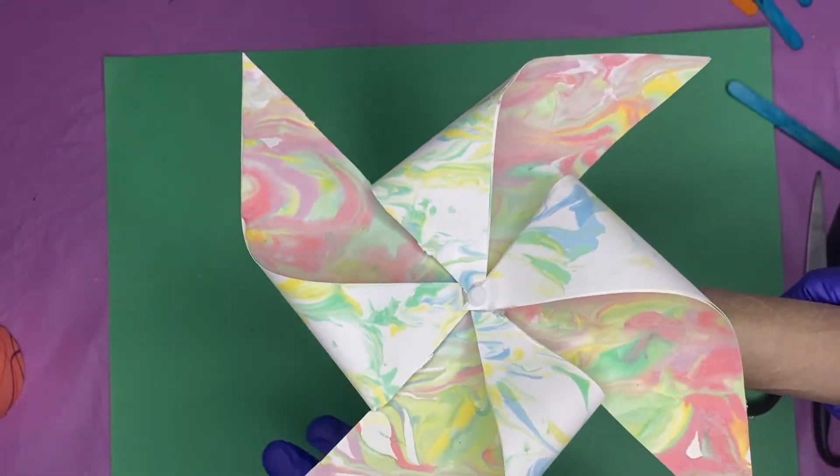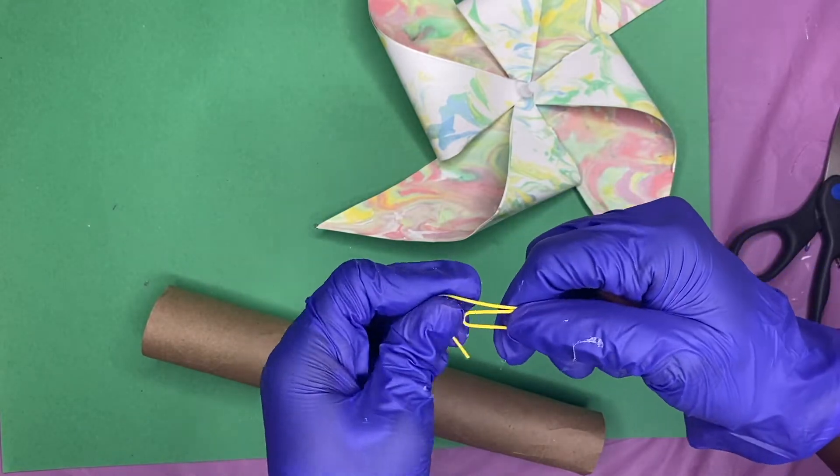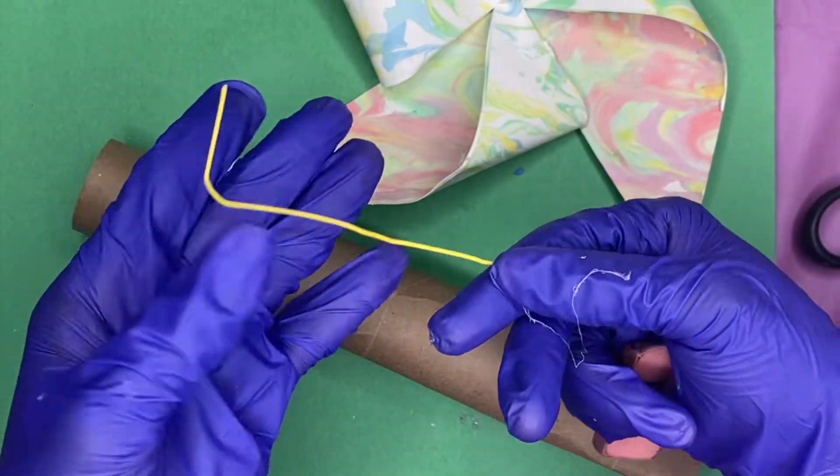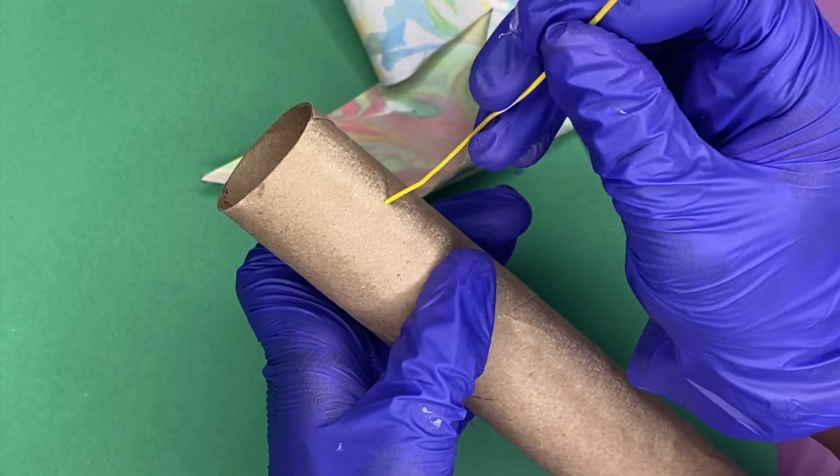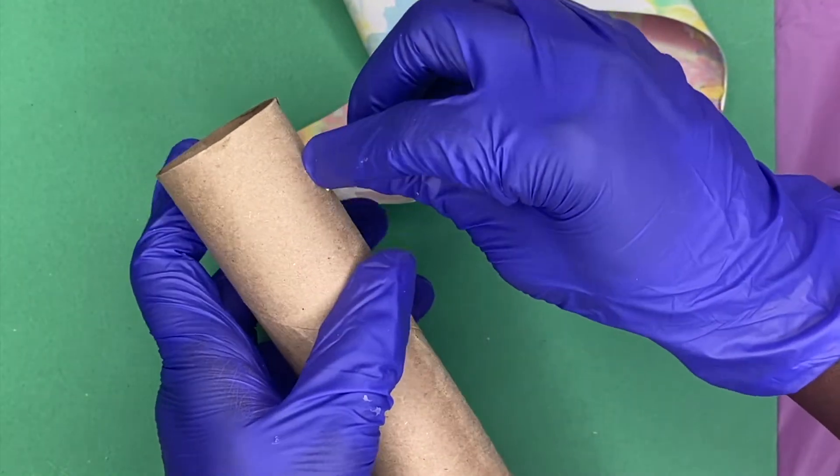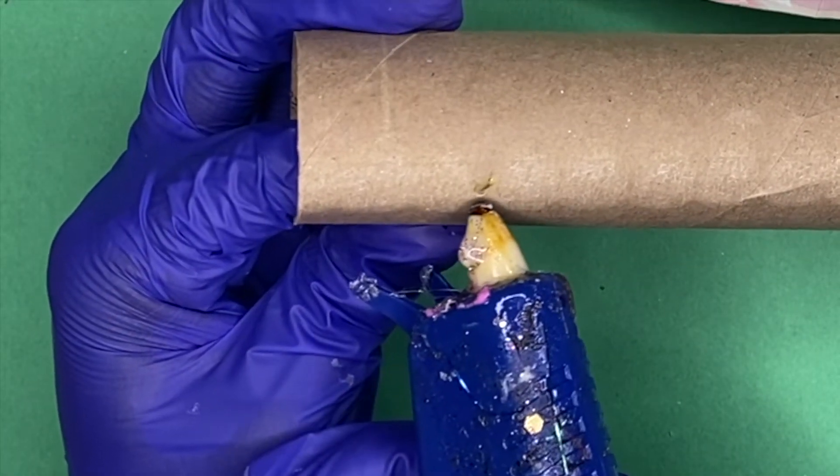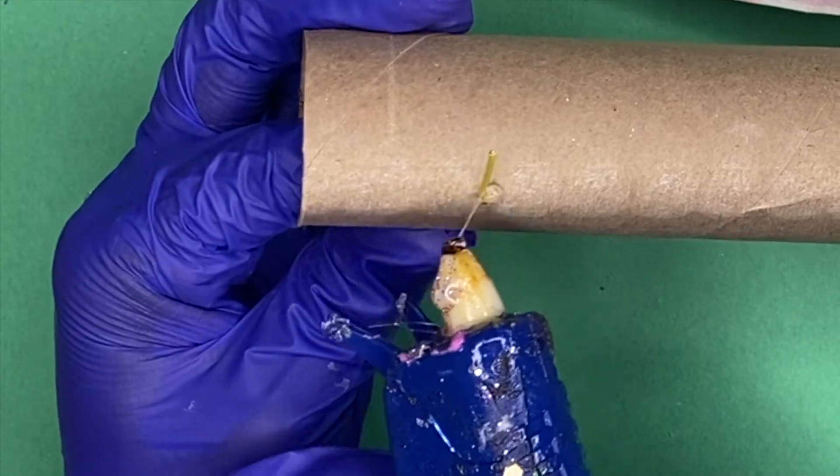So what you're going to need is a paper clip, and I took a paper clip and I unfolded it and I basically made an L shape. And I fished it through the paper towel roll and I used that as my leverage, and then I took the hot glue gun and I put some glue all around it so it doesn't move and it stays in place.